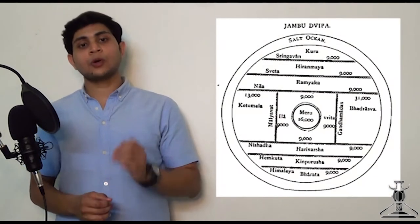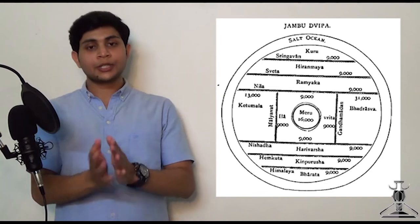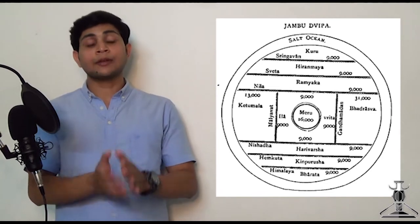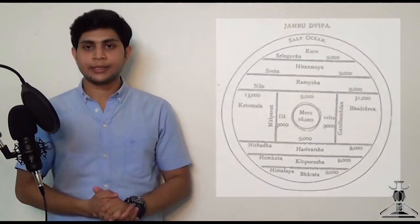In our earlier video, we had discussed the geographical details of the six Kula Paramatas, the seven Varshas, and the rivers from the Indian subcontinent. In this video, we are going to discuss the other geographical details from Mahabharata.